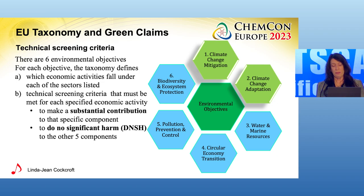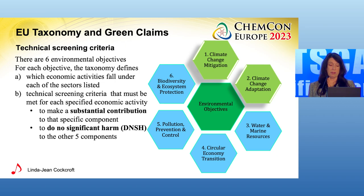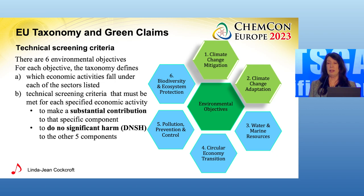There are six environmental objectives. Two on climate change — climate change mitigation and climate change adaptation. The technical screening criteria for those were defined back in 2021, and companies are already starting to report in terms of those two objectives. But there are four others: sustainable water, circular economy, pollution prevention, and biodiversity. Those are the six environmental categories. We get screening criteria in each case for the NACE codes — for the economic activities under each of these objectives.